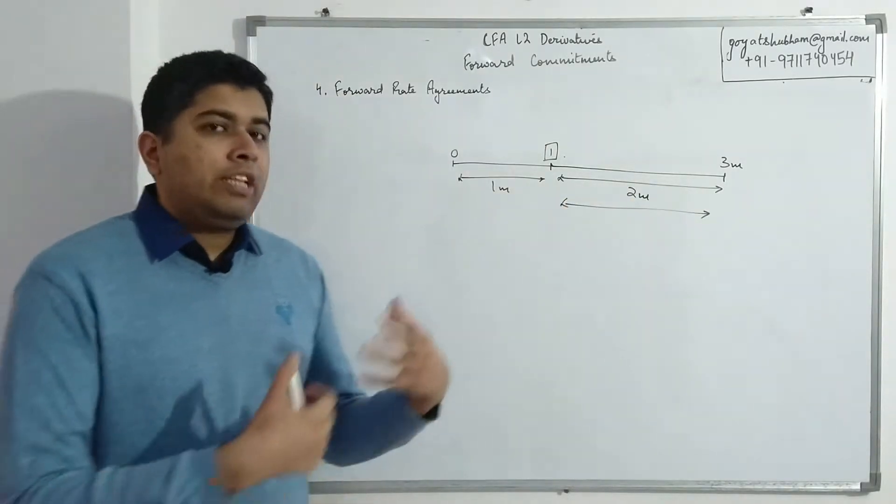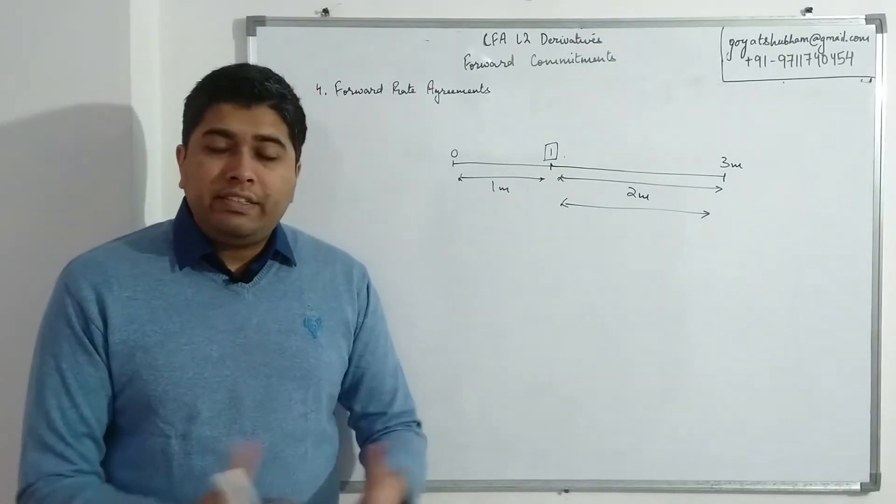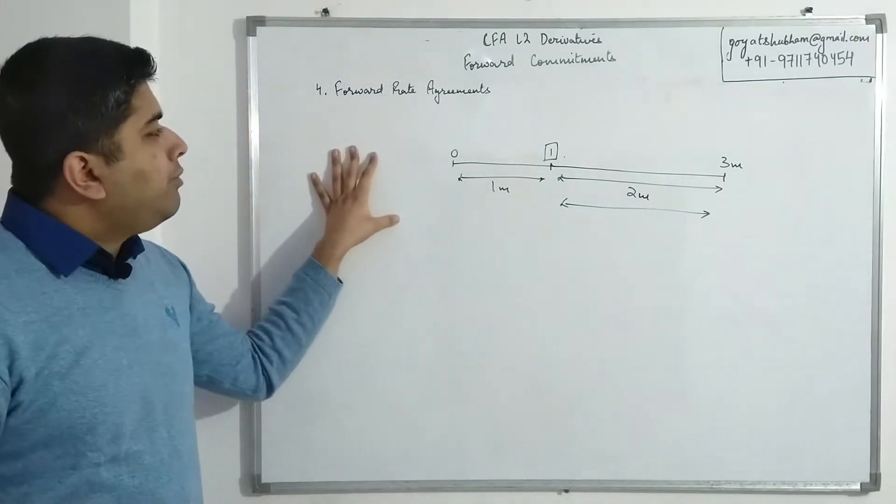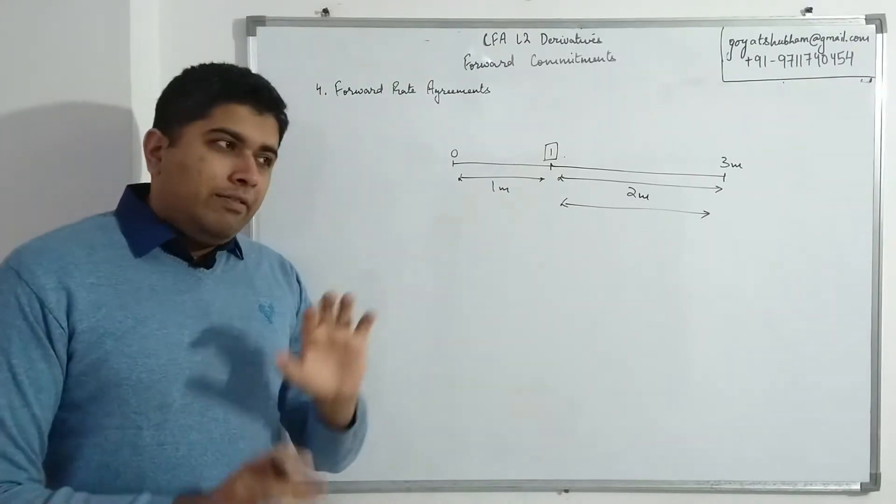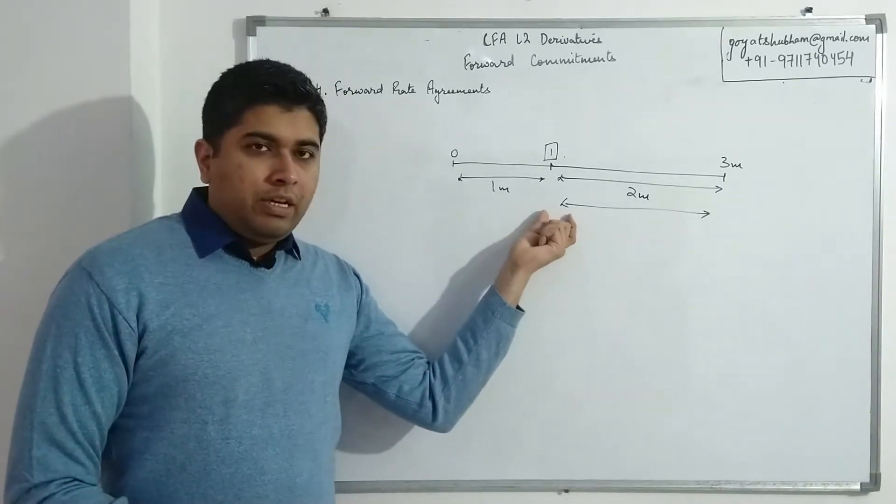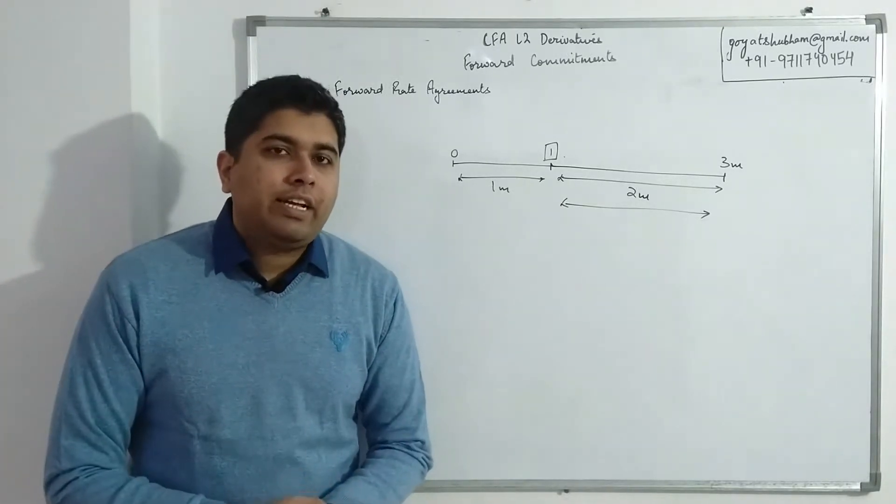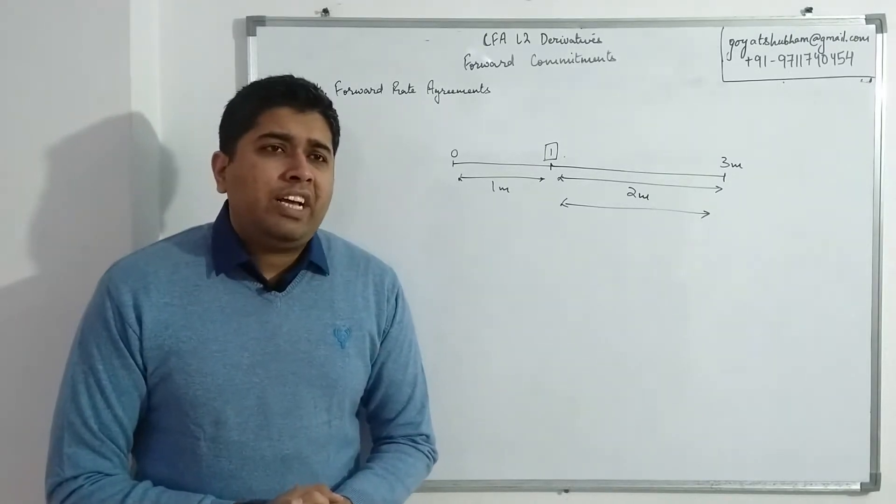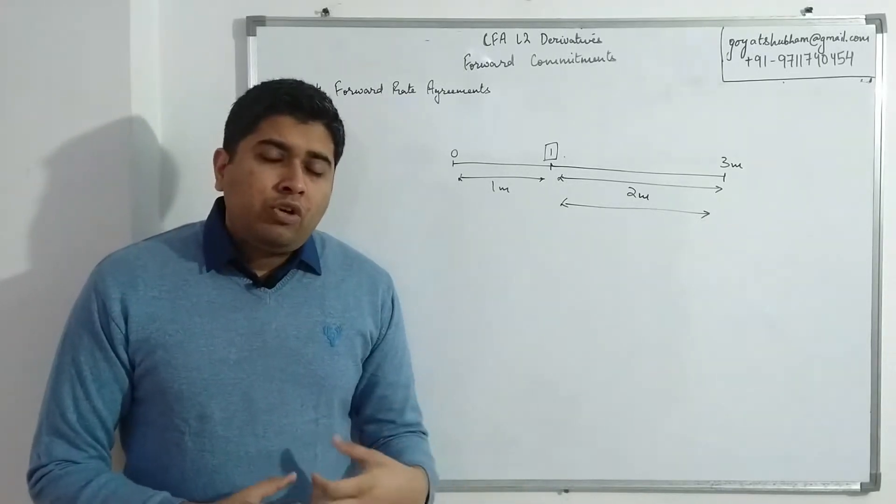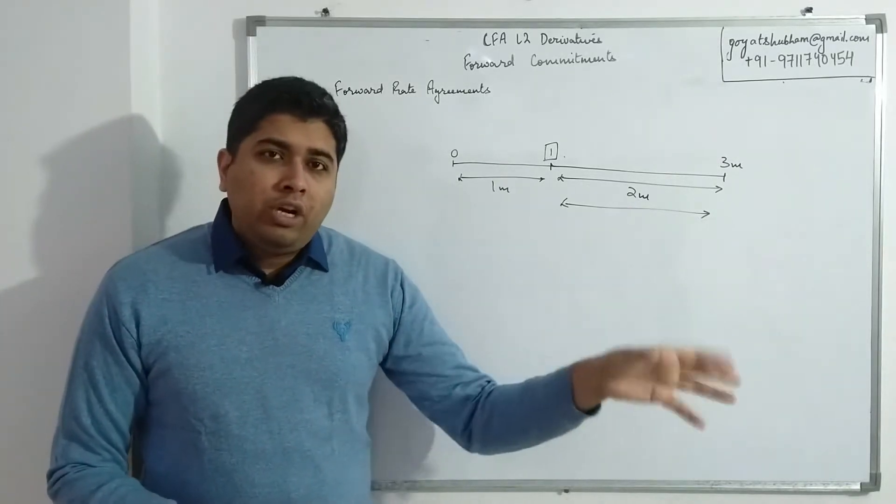Now, if I just wait to take the loan after one month, I'll be exposed to the vulnerability of interest rates increasing or decreasing. It exposes me to interest rate risk. So what I do is I enter into a forward rate agreement where at time zero itself I finalize the interest that will be charged when I take a loan after one month. So the loan is to be taken after one month, but the interest is being fixed at time zero. So I'm eliminating any sort of variation in interest rate that can happen. Logically, it works the same way as it did for forward equity or forward fixed income contracts, where the intention was I want to buy some company share after one month. The price may increase or decrease. To eliminate that vulnerability, that volatility, I am fixing a price right now known as forward price.